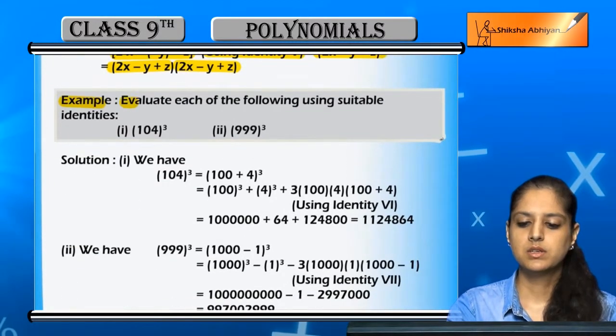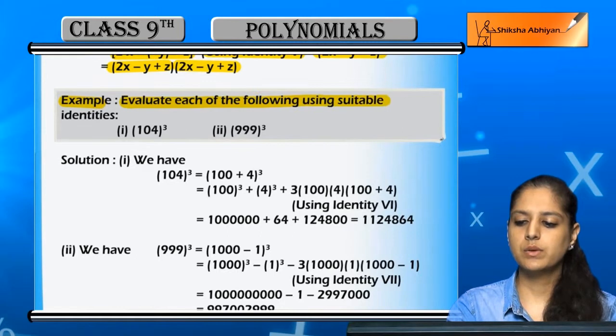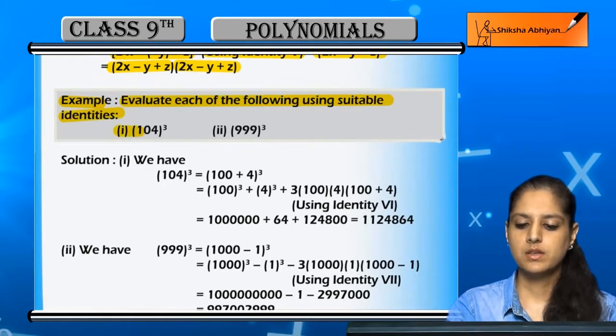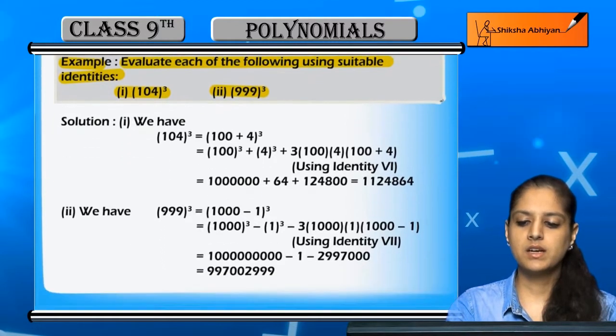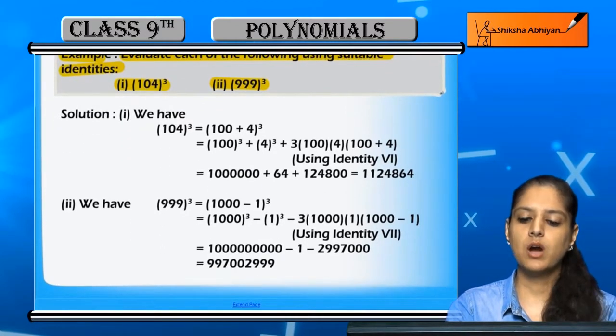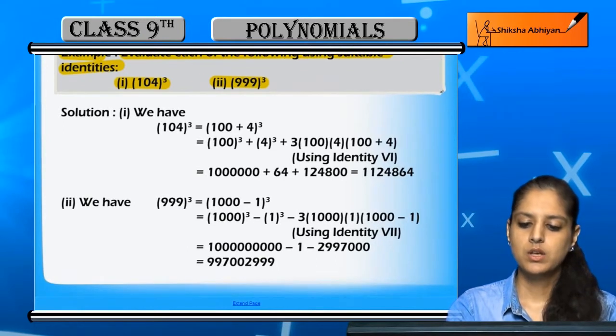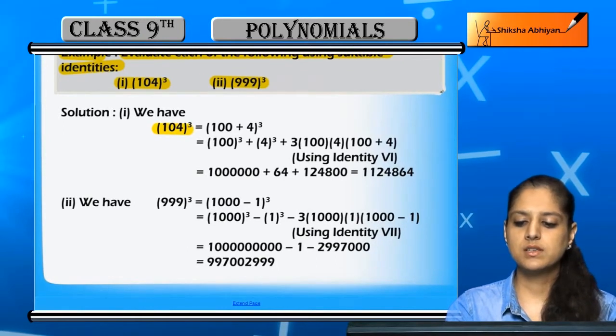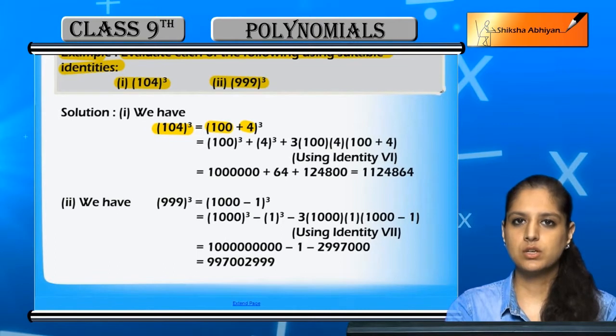Another example: evaluate each of the following using suitable identities. We need to find 104 cube and 999 cube without actually multiplying, using identities. 104 can be written as 100 plus 4, and its cube.